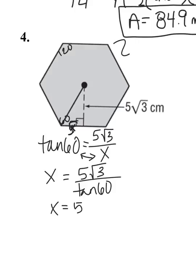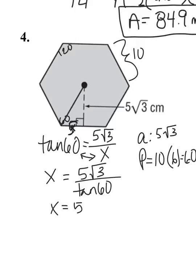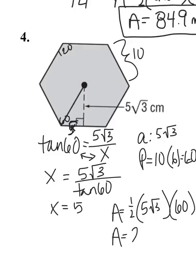The whole side then is 5 plus 5. It's 10. So apothem, 5 square roots of 3. Perimeter, I have 6 sides that are 10 centimeters each. My perimeter equals 60. So the area is 1 half the apothem times the perimeter. Area is going to be 259.8 centimeters squared.